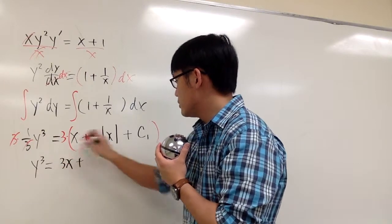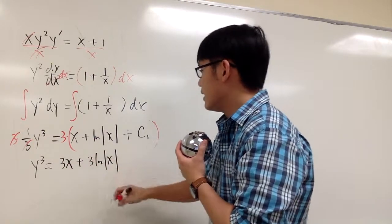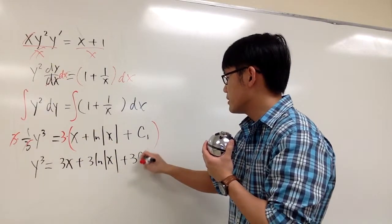So, 3x plus 3 ln absolute value of x, and then we have 3 times c1, so plus 3 times c1.